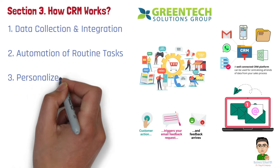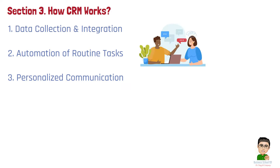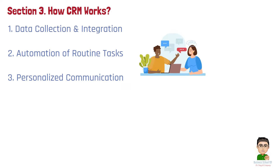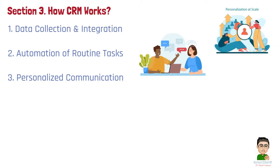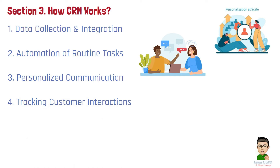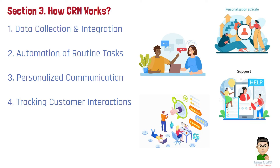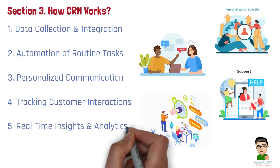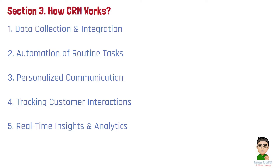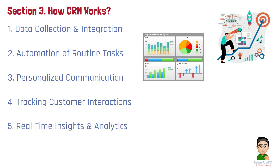Number 3: Personalized Communication. With CRM data, Greentech sends highly targeted messages. The marketing team can identify customers interested in energy-saving products but who haven't yet purchased and send them tailored promotions. This personalized outreach increases engagement and boosts conversion rates. Number 4: Tracking Customer Interactions. Greentech's CRM tracks every customer interaction, from phone calls to social media queries. If a customer contacts support about a past purchase, the service team can quickly access the customer's history and provide personalized assistance, improving the customer experience and fostering loyalty. Number 5: Real-Time Insights and Analytics. The CRM provides real-time dashboards with key metrics like sales performance and customer satisfaction. If data shows that personalized follow-up emails boost purchase rates by 30%, Greentech can adjust its strategy accordingly. These insights allow for more informed, data-driven decisions.